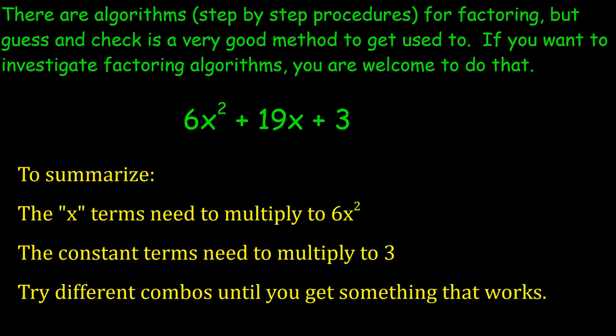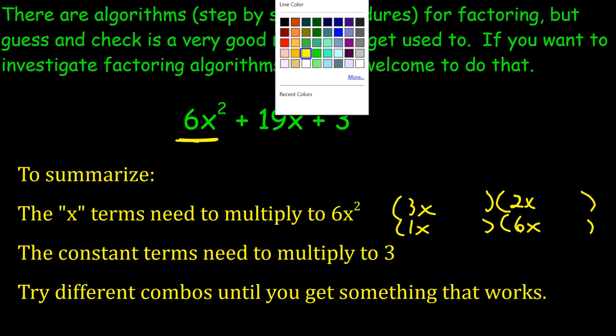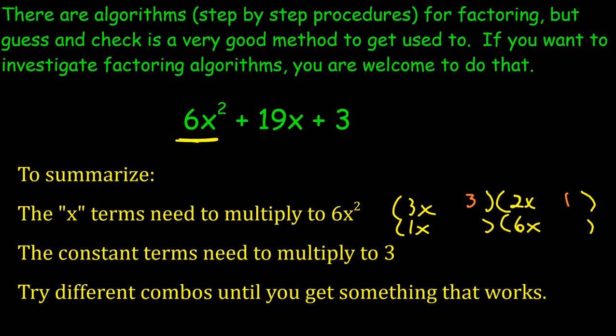So in this example, to summarize, the x terms would have to multiply to give you 6x squared. So our options are going to be 3x and 2x, or maybe 1x and 6x. The constant terms need to multiply to 3. So that means we would have 3 and 1, or 1 and 3, maybe switched around. And then you try different combinations until you get positive 19x in the middle. So unfortunately, this isn't something where it's just follow the step-by-step procedure like a recipe. It doesn't necessarily work like that. You do have to do some guessing and checking. But, trust me, in the end, your number sense and your ability to do this will be a lot better if you focus on the guess and check.